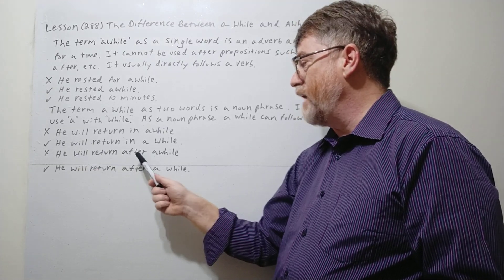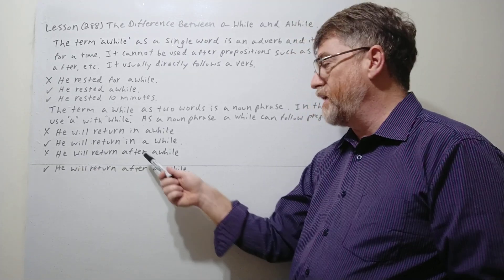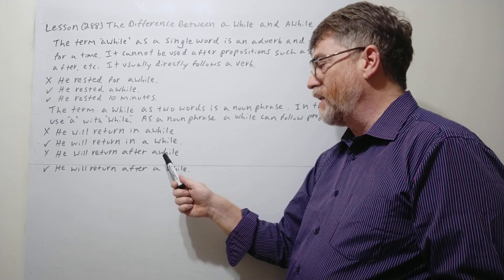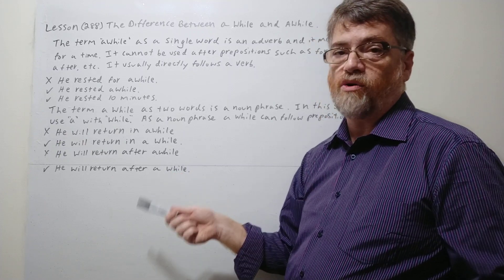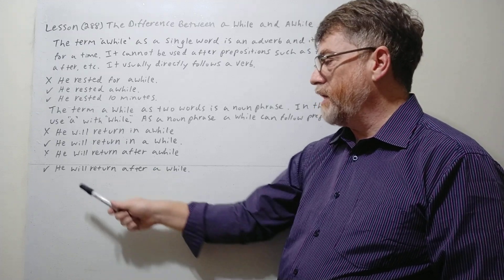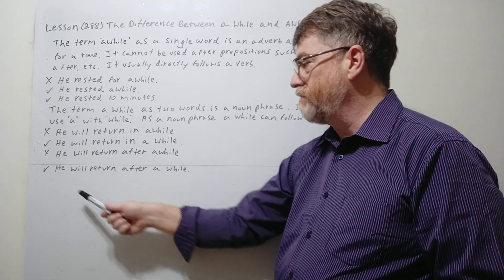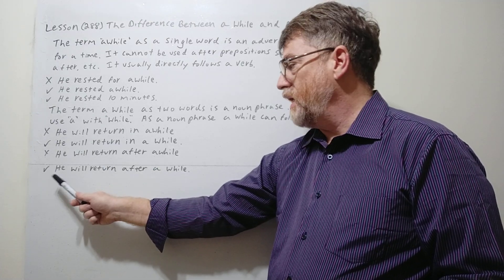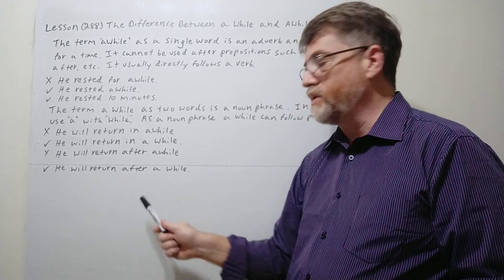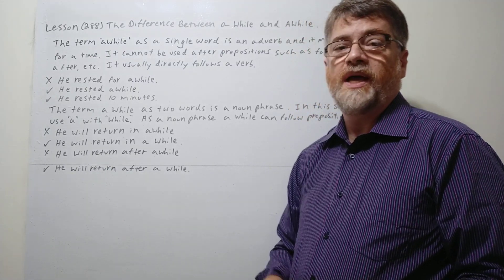He will return after a while. Again the same thing, after is still a preposition, so a while as a single word is not correct here. It's an adverb. And let's read the last one. With the check this is correct: He will return after a while, two words. Again it's the noun phrase.